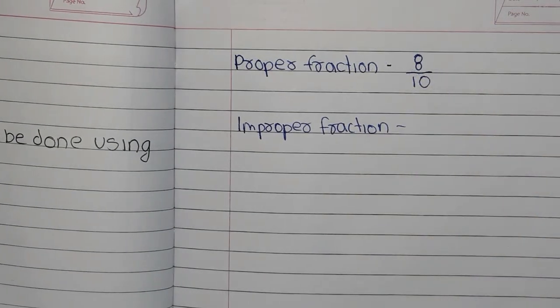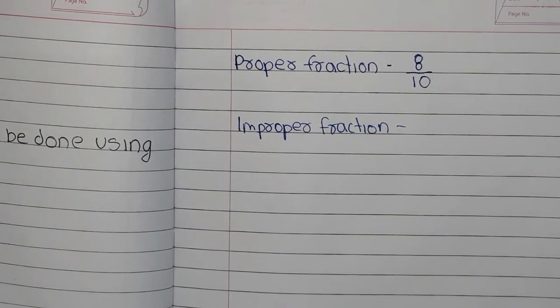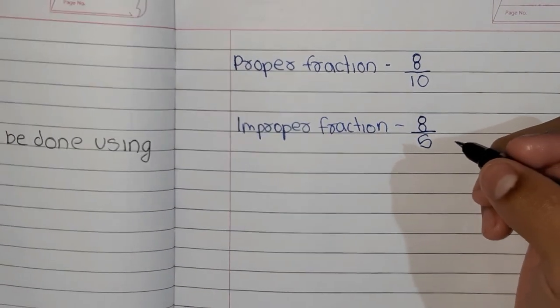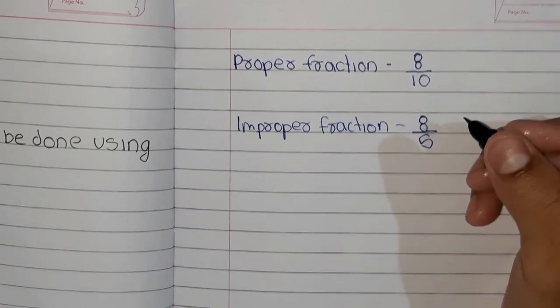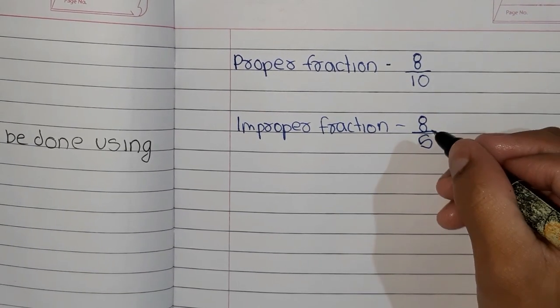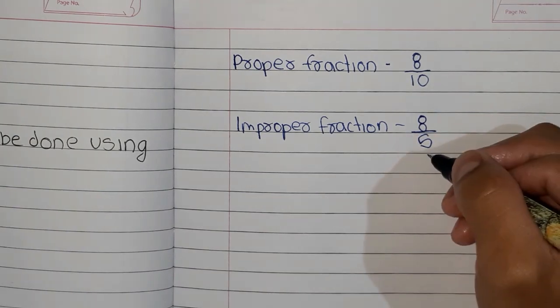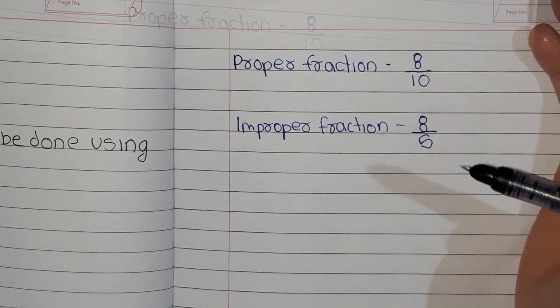Now improper fraction. For example, 8 by 5. Improper fractions are more than one whole. So it means that the number which is in the numerator should be greater than the denominator.